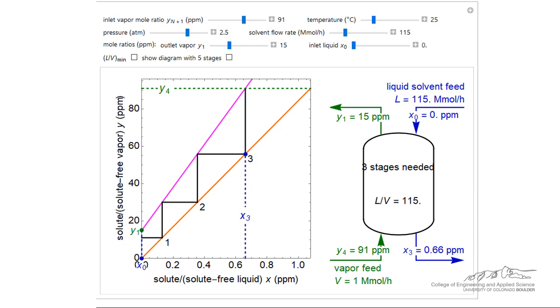The dynamic simulation shows an absorption column on the right with an inlet gas concentration of 91 ppm and an outlet concentration of 15 ppm. The gas flows from the bottom to the top of the column. It is contacted in counter-current orientation by a liquid solvent that initially contains no solute. The flow rate of the liquid stream is much larger than that of the gas stream, 115 megamole per hour versus 1 megamole per hour.